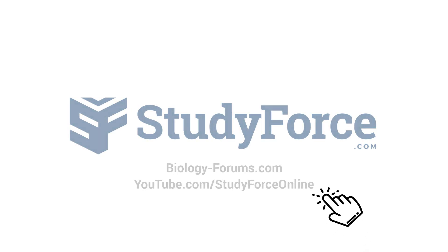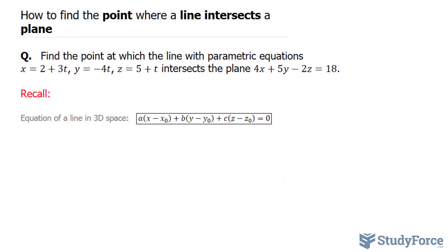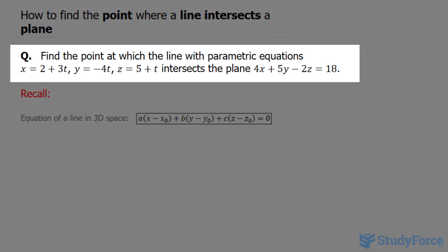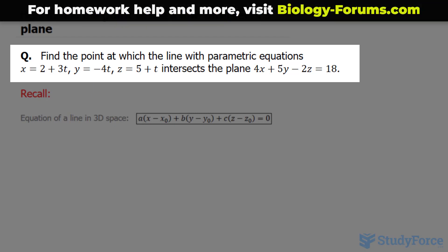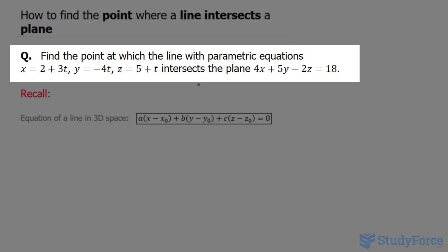In this lesson, I'll show you how to find a point where a line intersects a plane in 3D space. The question reads: find the point at which a line with the parametric equations written underneath intersects the plane 4x plus 5y minus 2z is equal to 18.